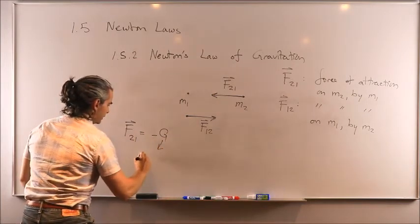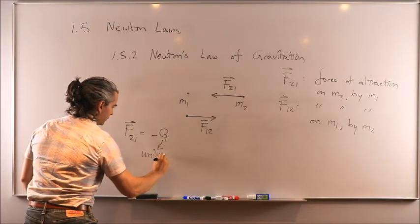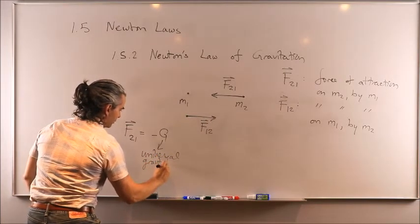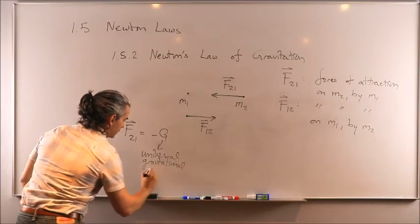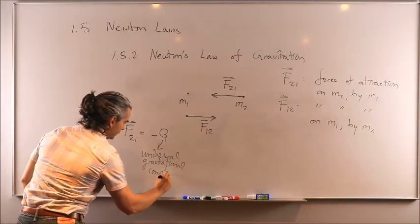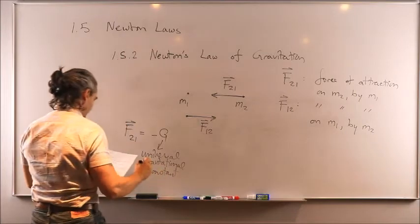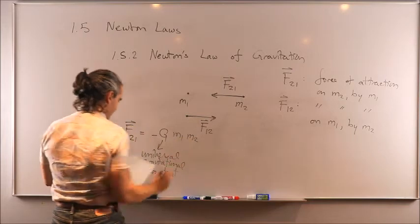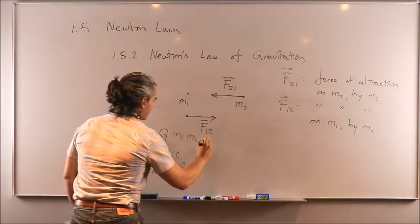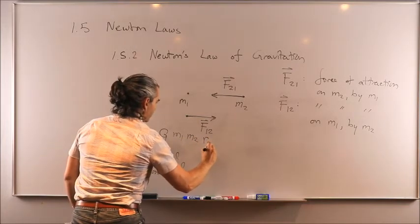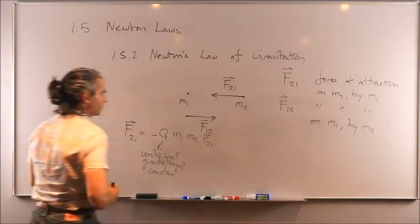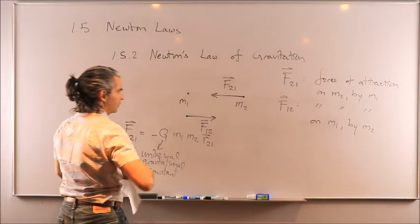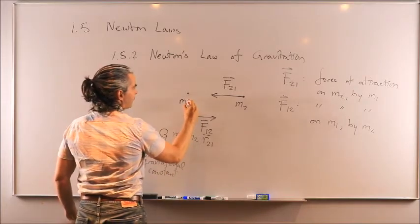Where this is known as the universal gravitational constant, times m1 times m2 times r_21, where r_21 is the position vector of mass 2 with respect to mass 1.